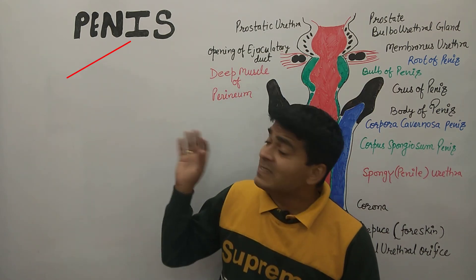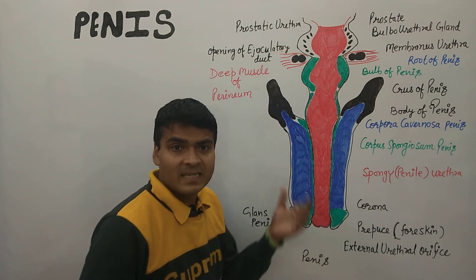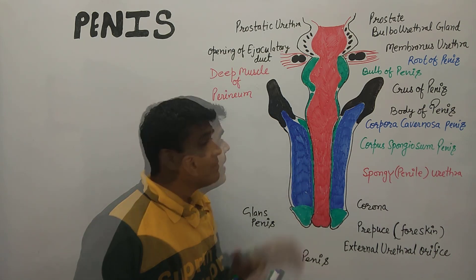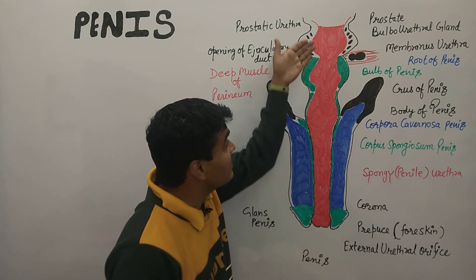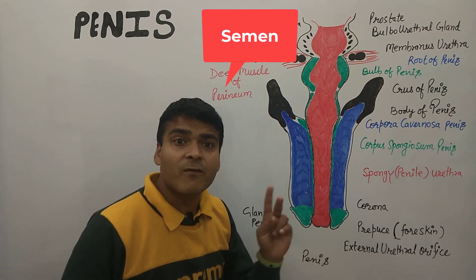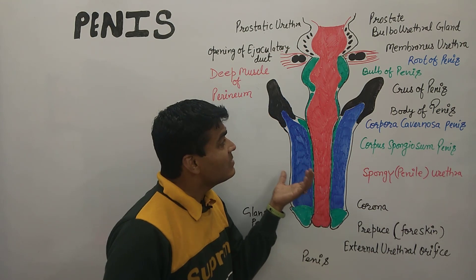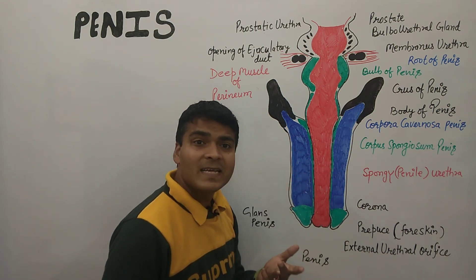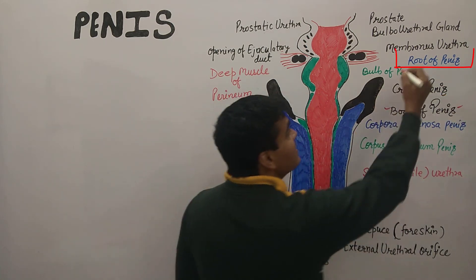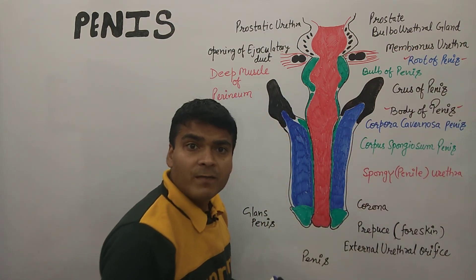The penis is a cylindrical structure and it is a passageway for urine as well as semen. We can see the penis structure in two parts: the first one is the body of the penis, and the second one is the root of the penis.